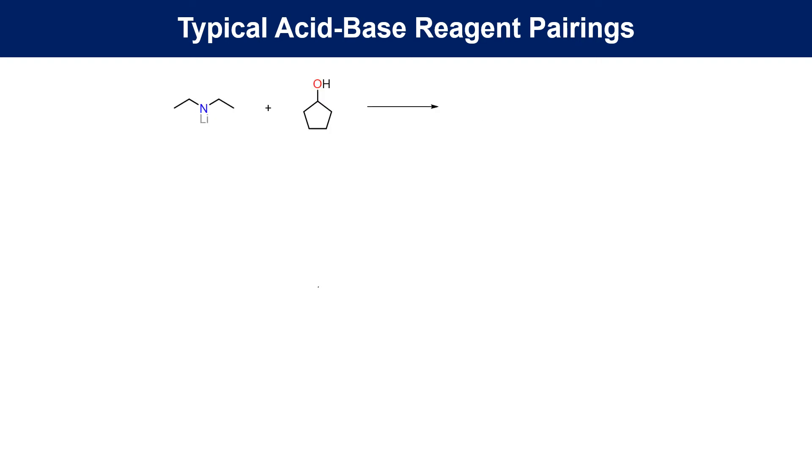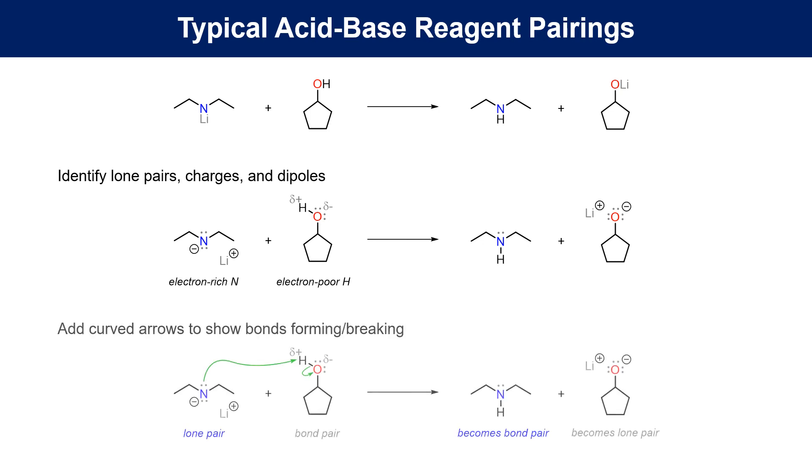In the next example, we have the lithium salt of an amine reacting with an alcohol. This results in a proton transfer to give the amine and the alkoxide salt. For the starter materials, the anionic nitrogen is identified as the electron-rich center and the proton on O as the electron-poor center. The bond-making curved arrow then begins at the electron-rich N and is pushed to the electron-poor H. The second bond-breaking arrow describes the electronegative O taking a pair of electrons to avoid breaking the octet rule and completing the process.